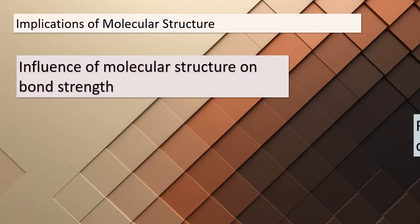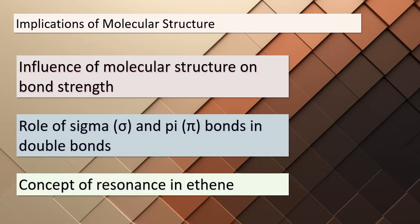Ethene's unique molecular structure has profound implications for its properties and reactivity. The arrangement of sigma and pi bonds within the carbon-carbon double bond is of utmost importance. The presence of pi bonds introduces the concept of resonance, which further enhances the stability and reactivity of the molecule. These structural features directly influence how ethene participates in various chemical reactions and interacts with other substances.